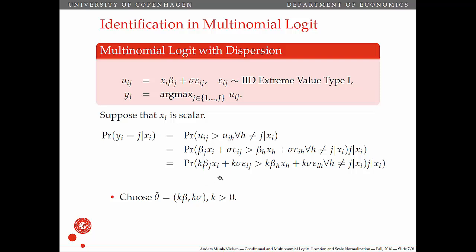So in other words, this time, if you tell me that the true parameter values are some beta and sigma, then I just multiply them both by the same positive number, and I create the same choice probabilities as what you gave me. In other words, the model is not identified.